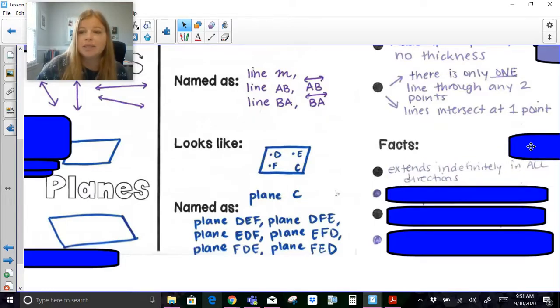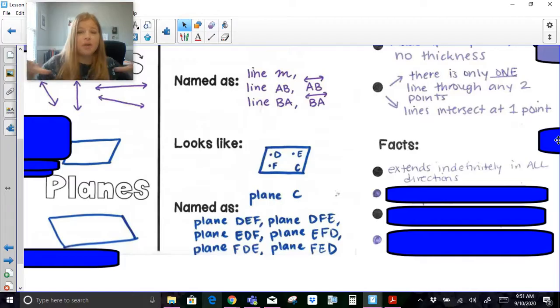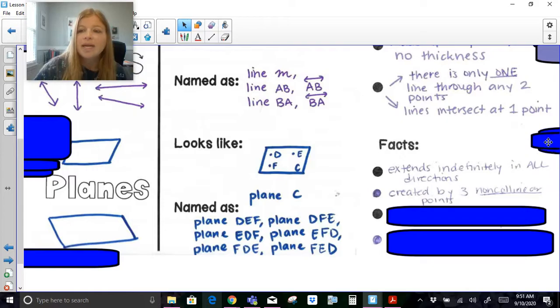Some facts about planes. They extend indefinitely in all directions. When I talk to you about a piece of paper being a plane, the paper stops. It's usually eight and a half by 11 if we're talking about a standard sheet of paper. But a plane is a surface that extends east to west, north, south. However that plane is figured, it goes the entire way through. It's created by three non-collinear points, which is what I mentioned before about D, E, and F.